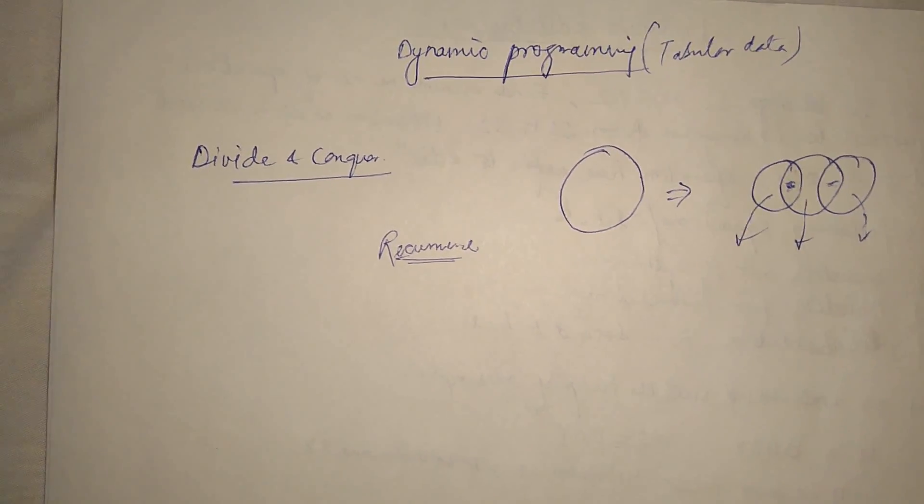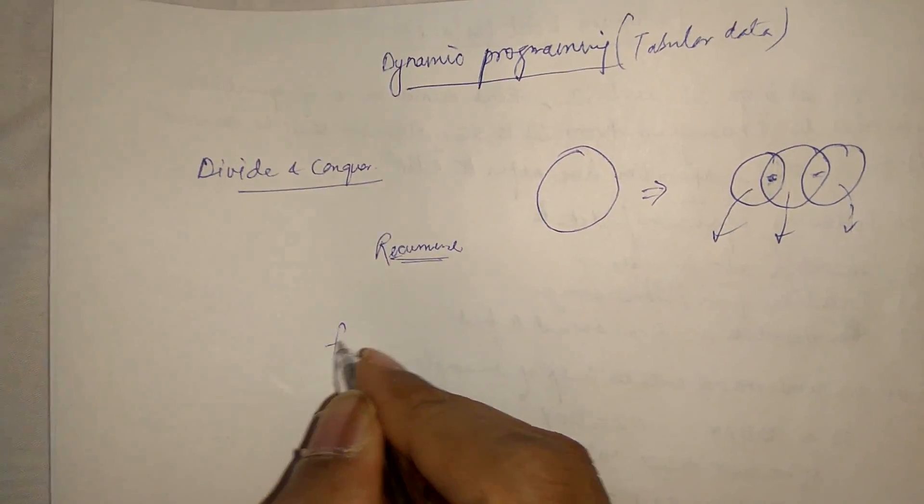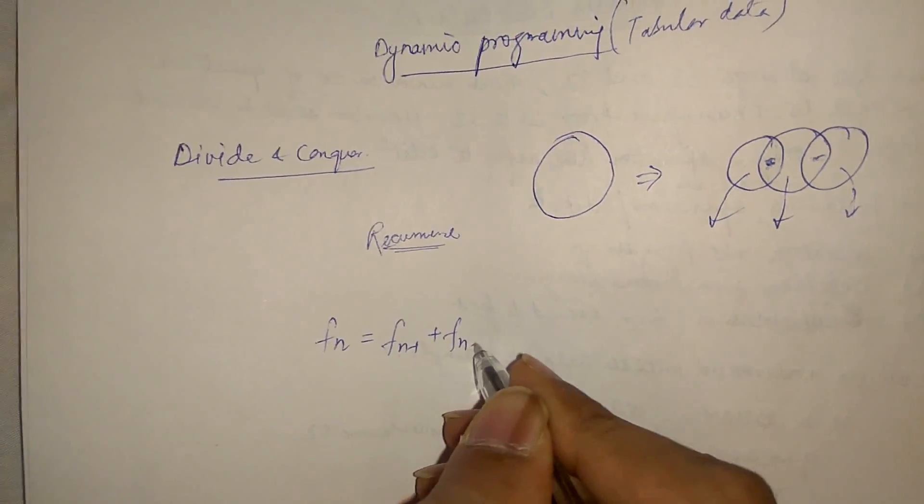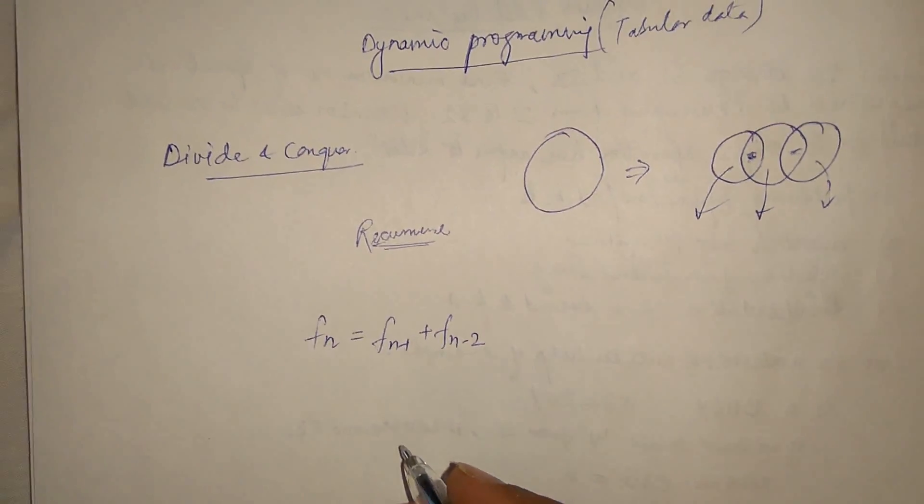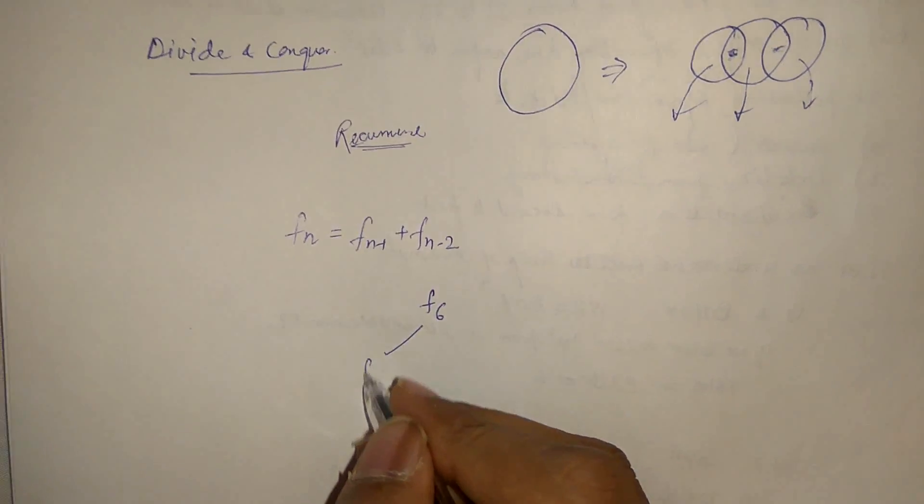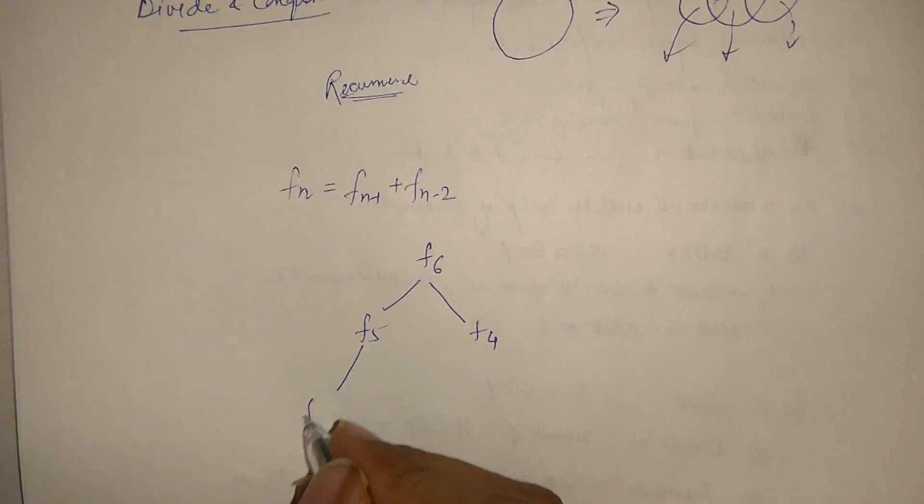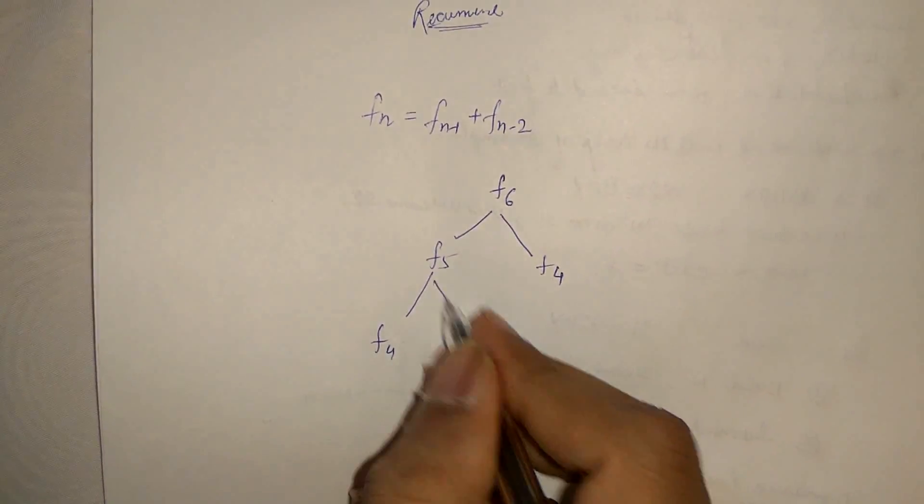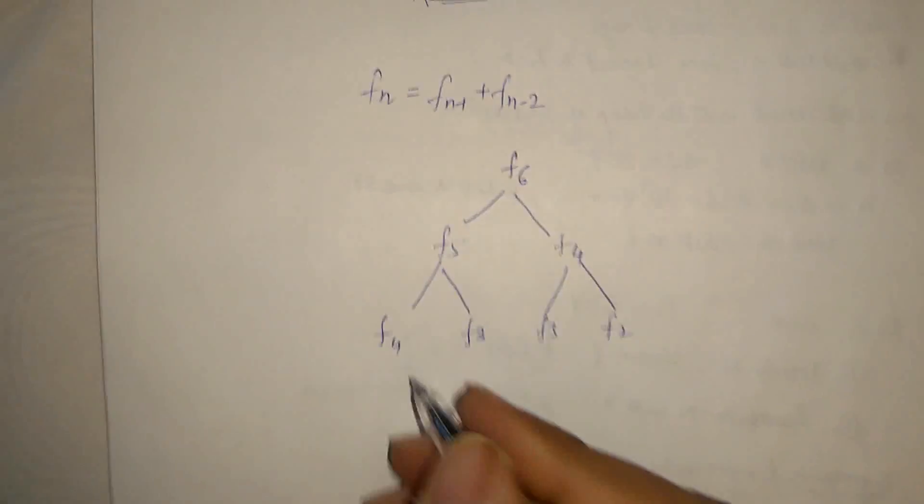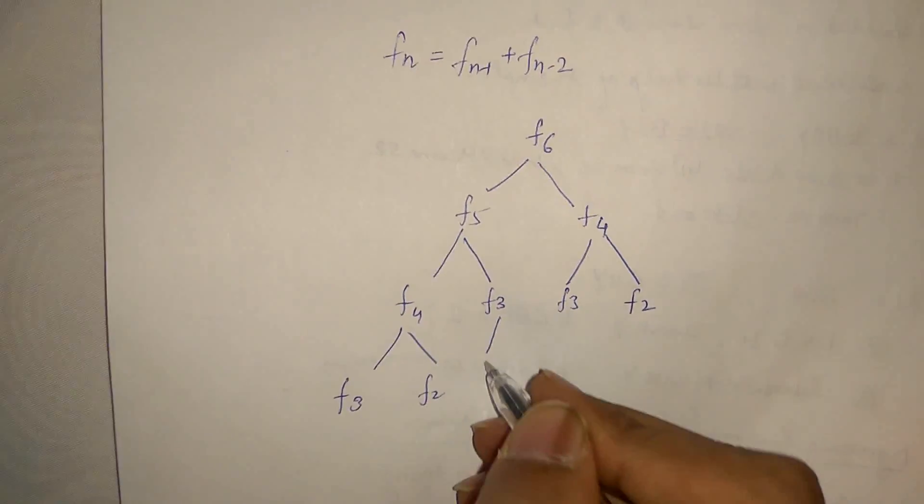Now, let us see one of the examples. You know about this Fibonacci. Fibonacci of any nth term will be summation of two previous terms. So if we want to compute Fibonacci of six, we need to compute the Fibonacci of five and Fibonacci of four. For five, we need to compute Fibonacci of four and Fibonacci of three. For this three, two, for this three, two, this is two, one.